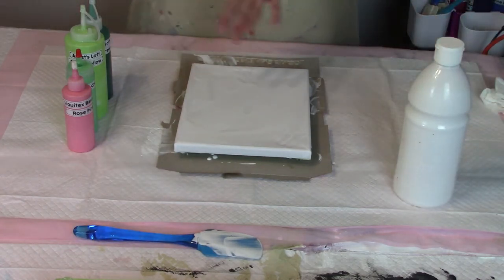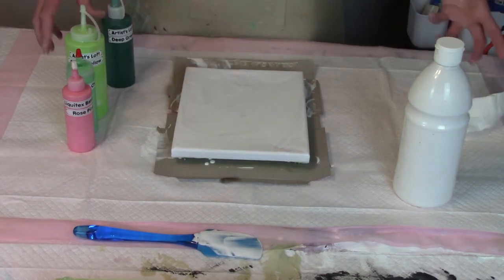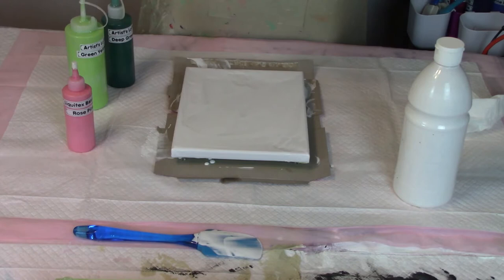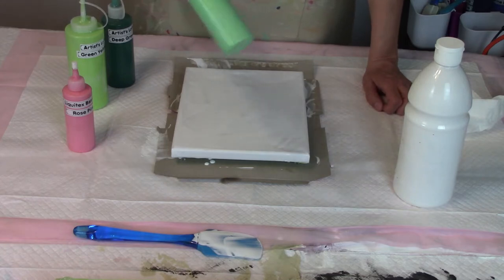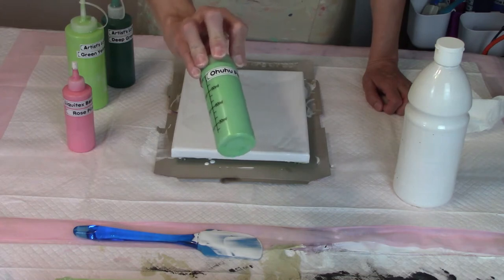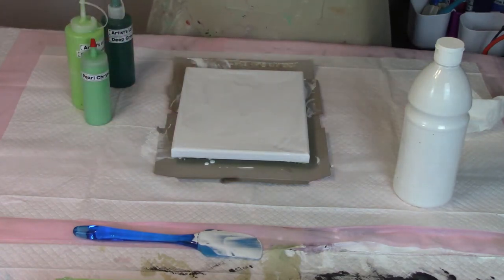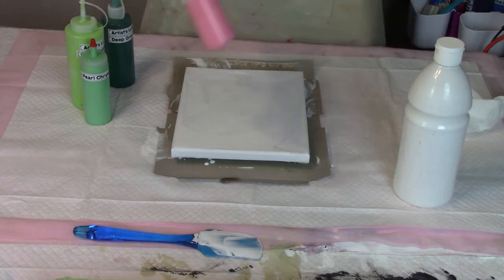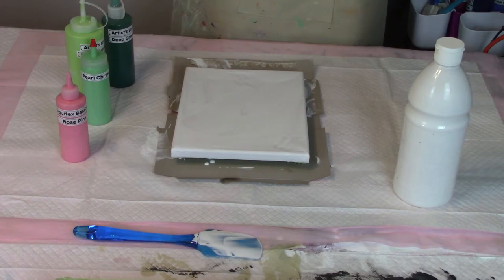All right, so tonight's colors for our experimental painting are going to be Artist Loft Deep Green. I don't use greens a lot unless they're accent colors, but tonight they're going to be the center of attention. So Artist Loft Green Yellow, then I have this Ahuhu Chrysoberyl Pearl. I know beryl is the name of a rock, so I'm guessing green rock. But if anybody knows how to pronounce that, you can put the pronunciation in the comments.